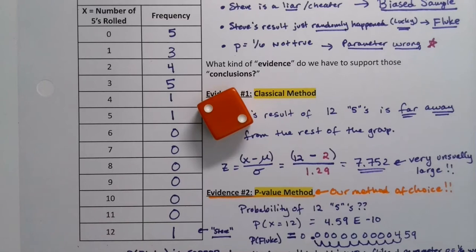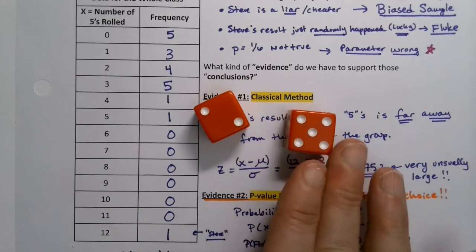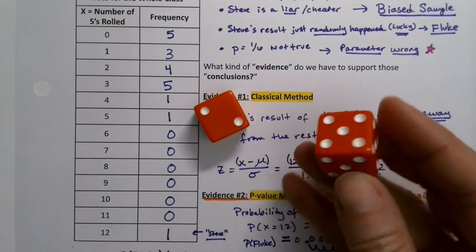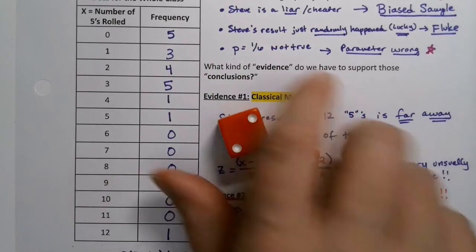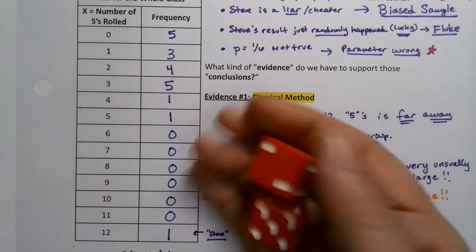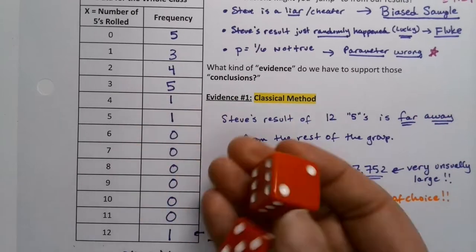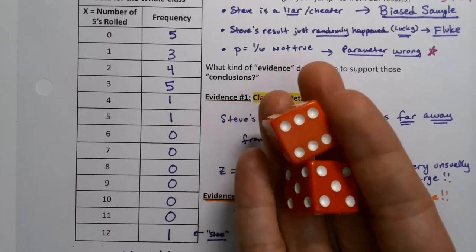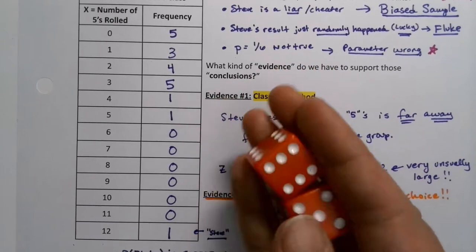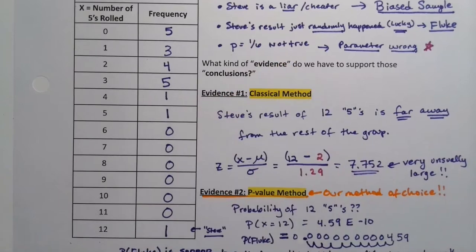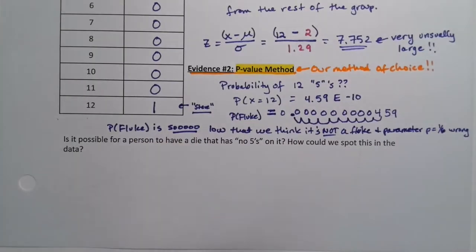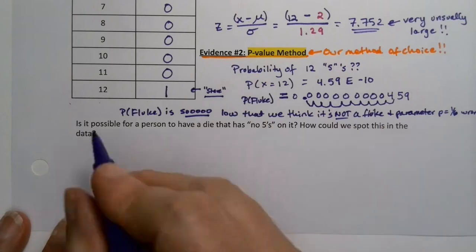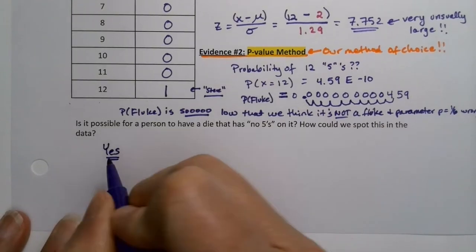And by the way the die that Steve is rolling is a die that's all fives, five five five five every single side. In craps if you roll these you win, you win if you roll seven or eleven which is all you'll ever roll on these two dice. They're fun. You wouldn't be able to walk into a casino with them, they're just more for fun, you can find them online.